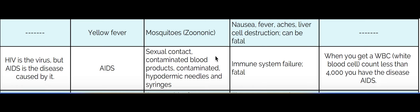If I mention vector, I'm asking you who is transmitting the disease. So in the case of yellow fever, the vector is the mosquito. The type of disease it is is a zoonotic disease because it is transferred from an animal to a human. The vector would be the transmitter.